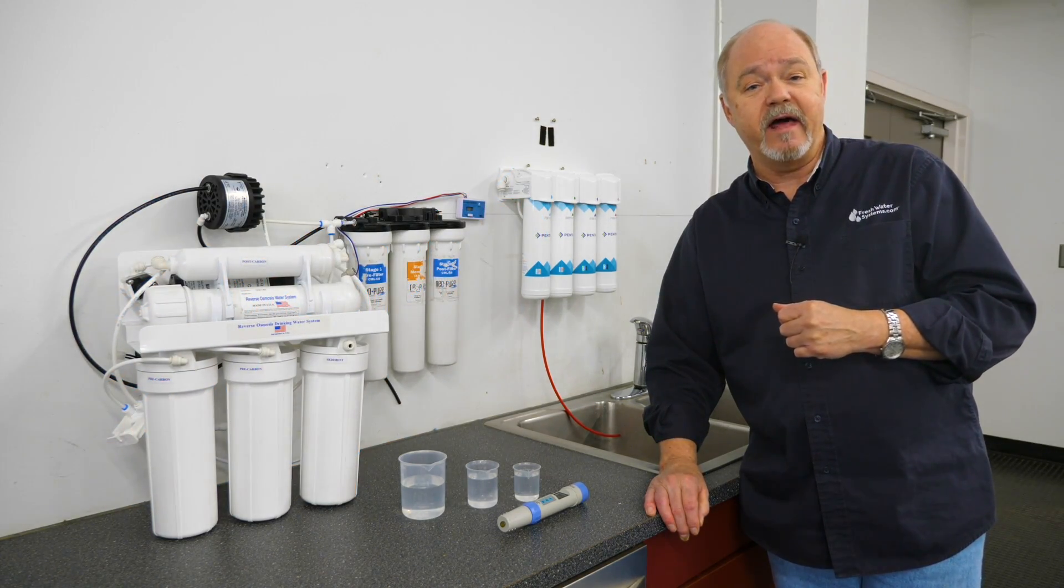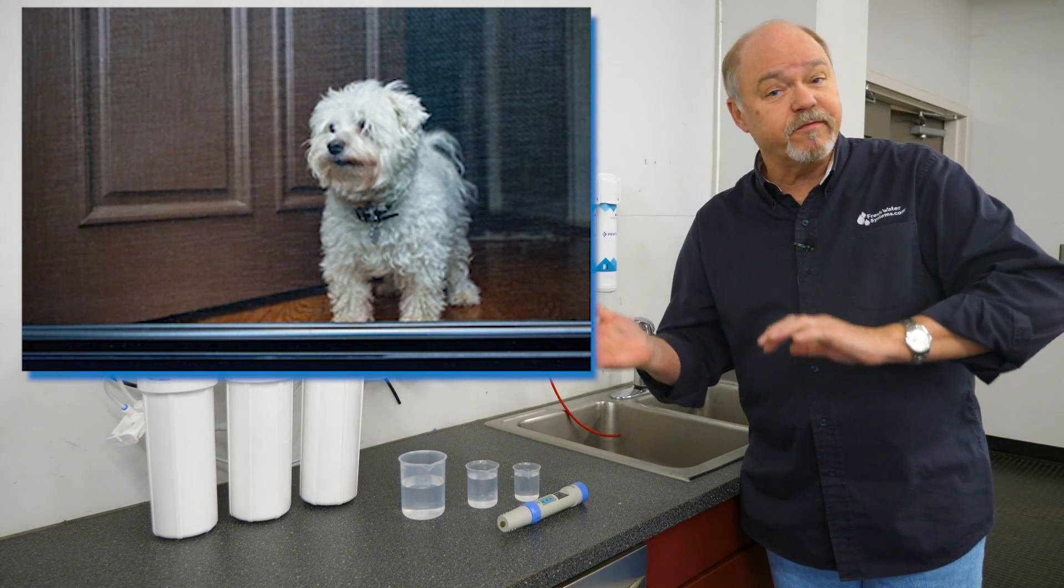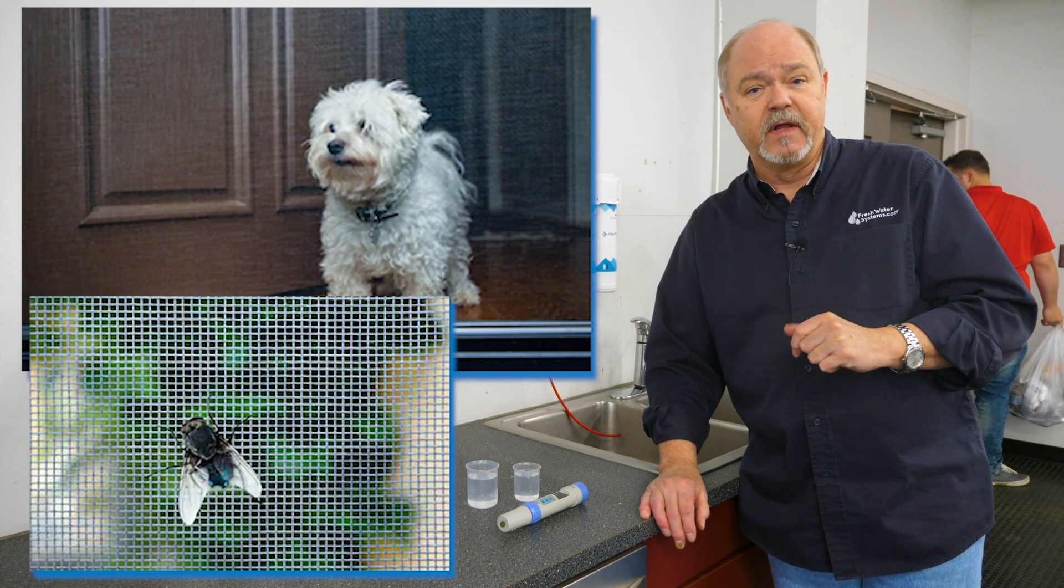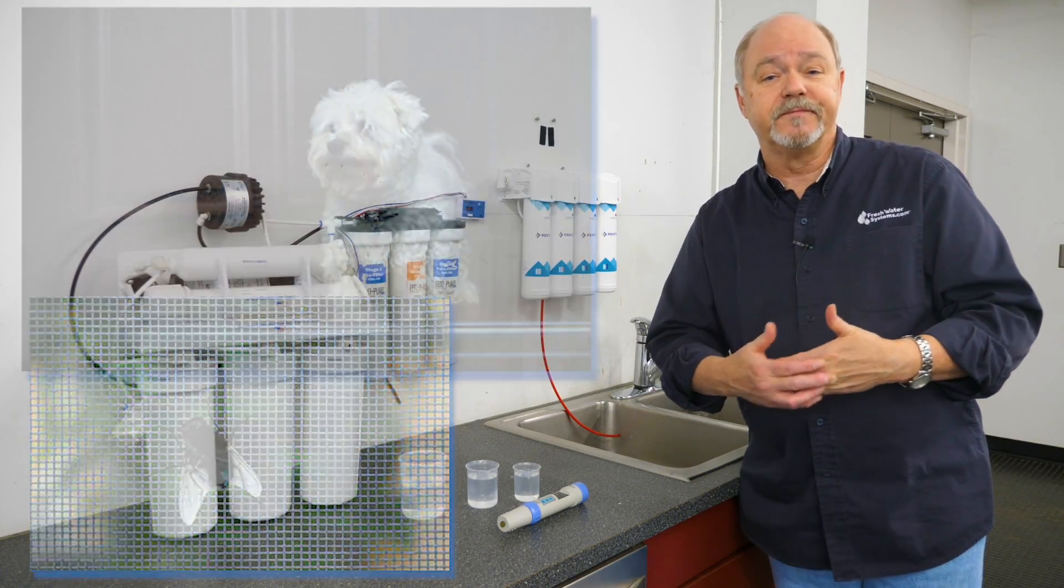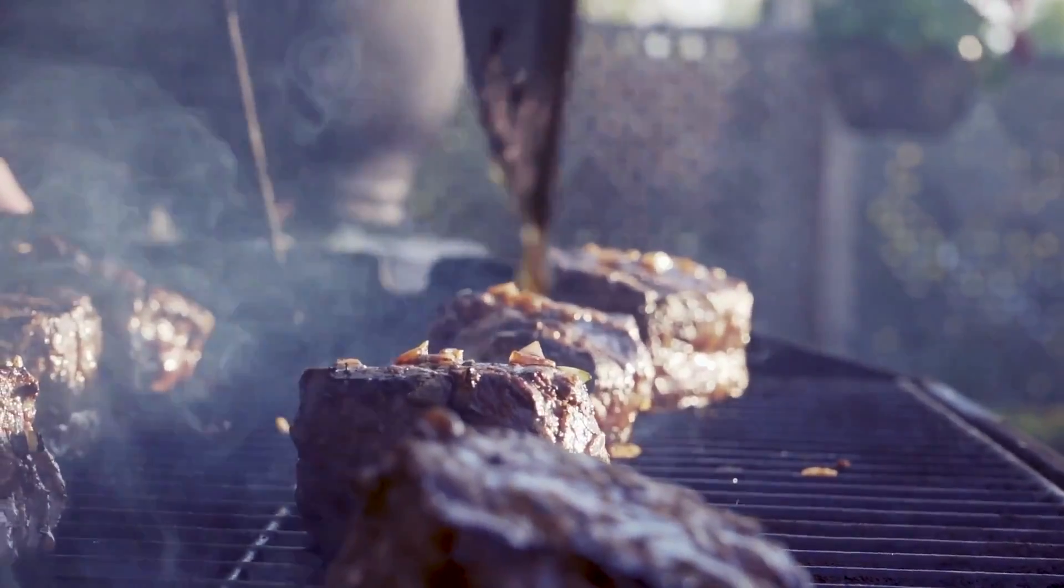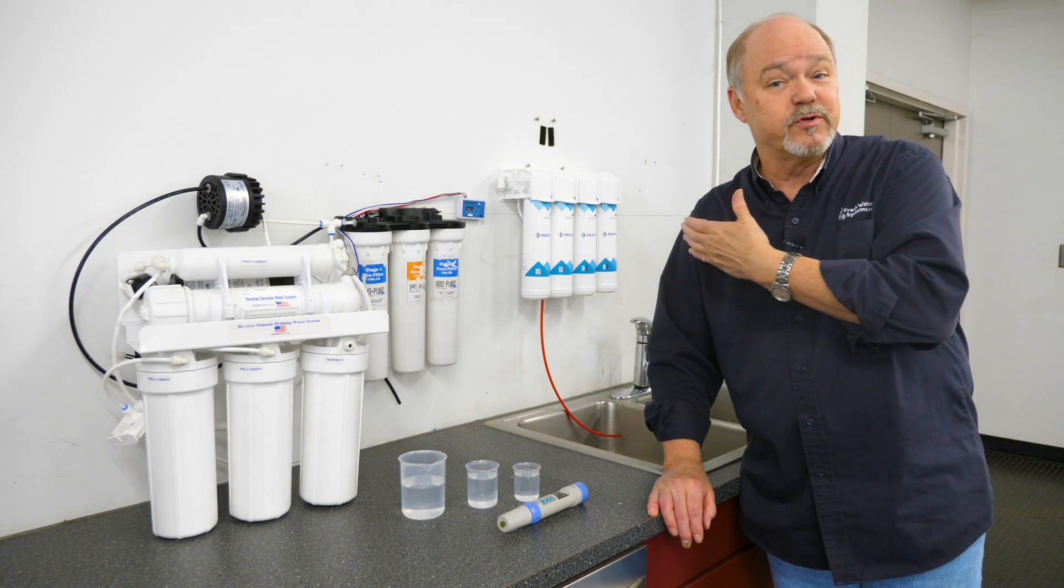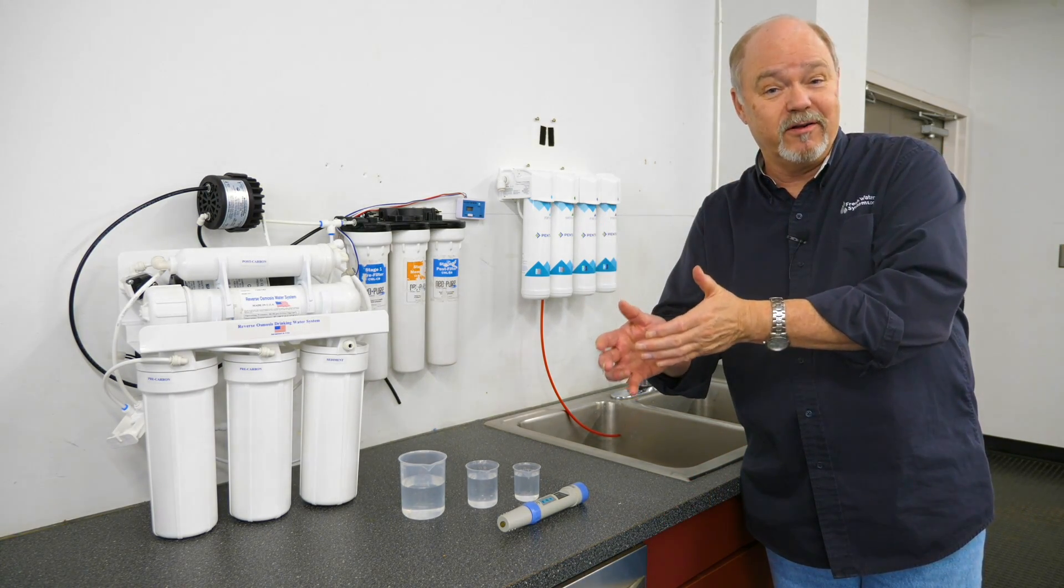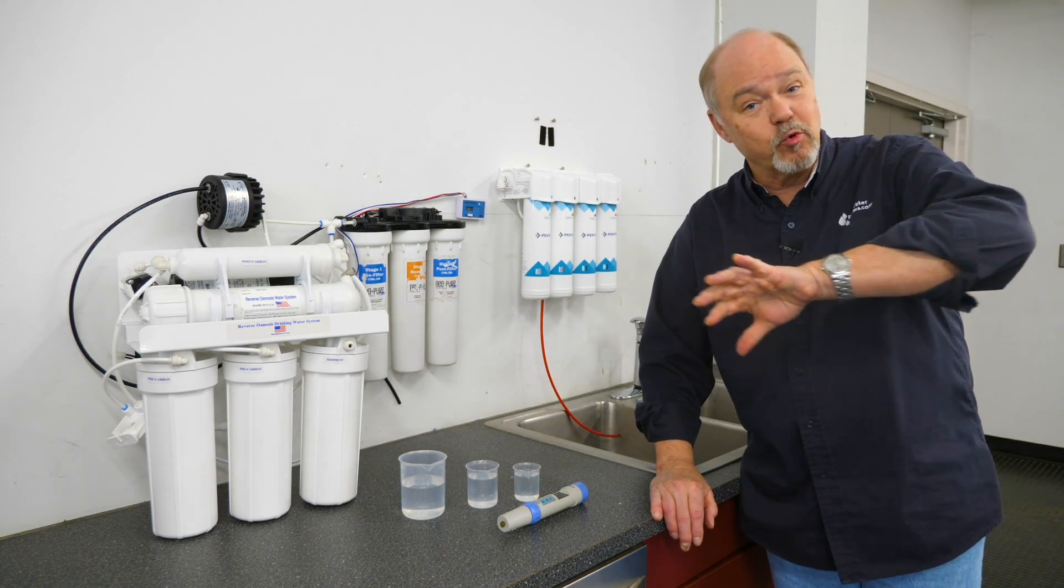The analogy I like to use with that is your screen door on the front door. You like to have that nice airflow through the screen but you want to make sure that the flies don't come in with the air. So you have a mesh or a filter if you will on the front of your house. TDS would be when your neighbors running his barbecue grill and you can smell what he's cooking because that comes right through the screen door. So just like dissolved solids that smell of the grill going on next door those are not solids they flow right through the screen.